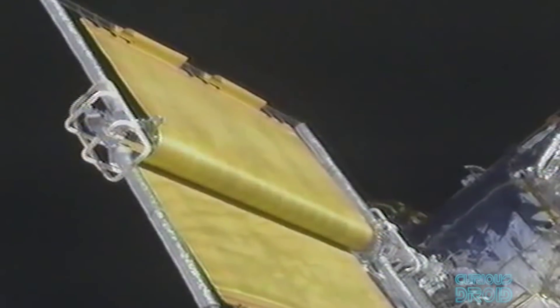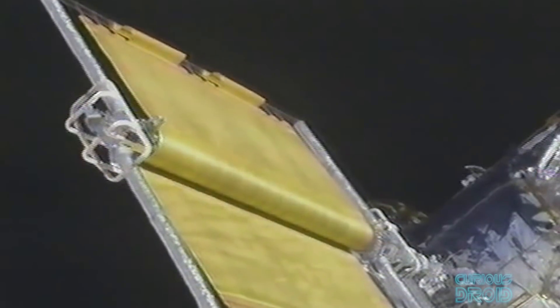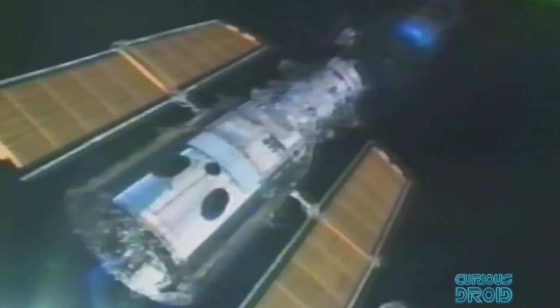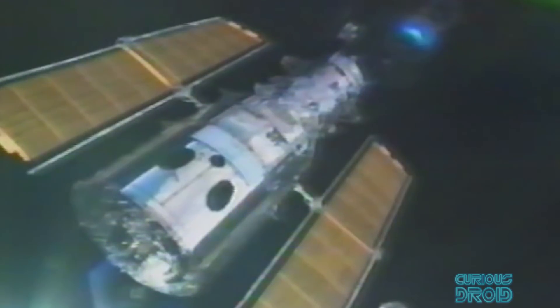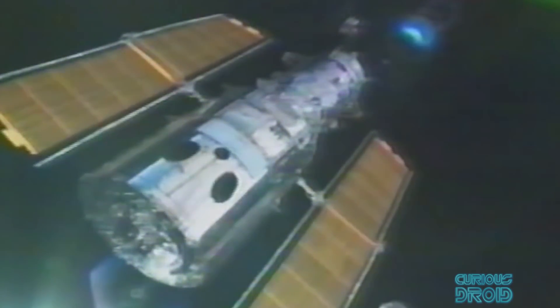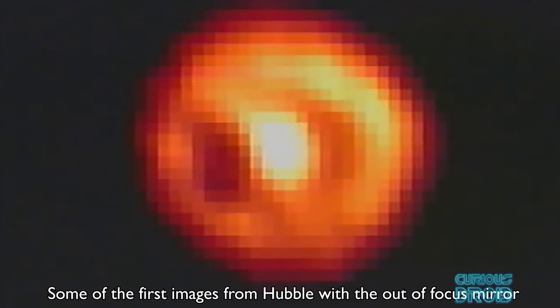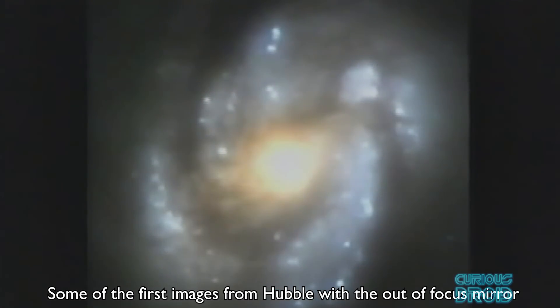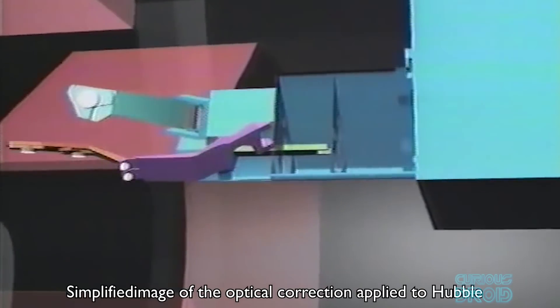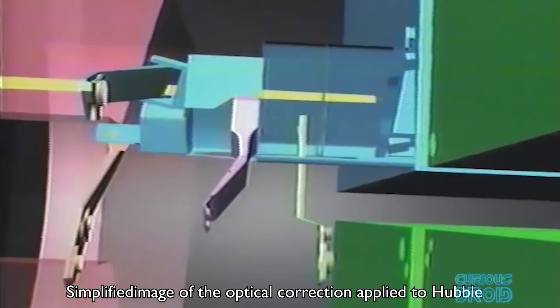Only when it was in orbit did they find that the most perfectly ground mirror in history had been made with a tiny error in its shape, effectively making it short-sighted. It took a further three years before a fix was created to finally get it working as it should.